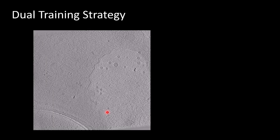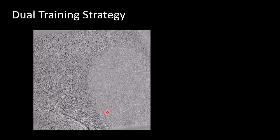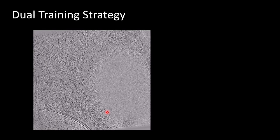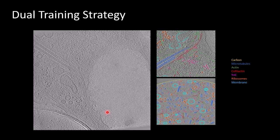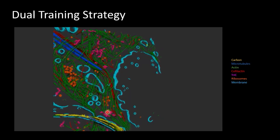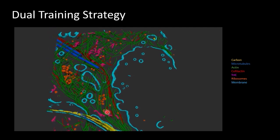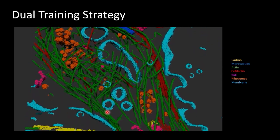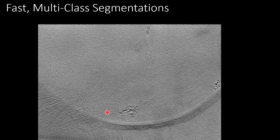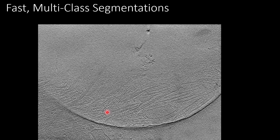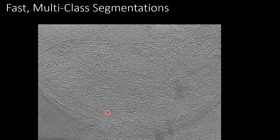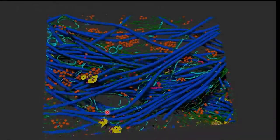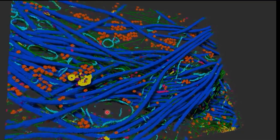We realized we're not yet good enough at simulating whole cellular data to do that alone. Instead, we landed on a dual training strategy: a little bit of real data plus a lot of fake data. This results in a network that segments whole cellular tomograms with about eight different features in roughly 20 minutes, very accurately. The model handles very densely packed tomograms with microtubules, ribosomes, and actin filaments — going from raw data to full segmentation in about 20 minutes.